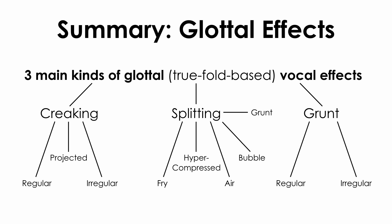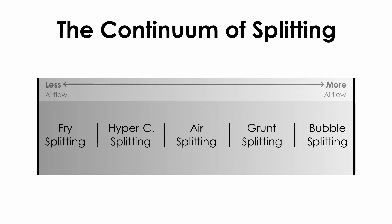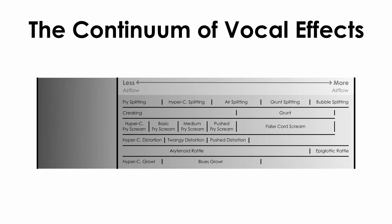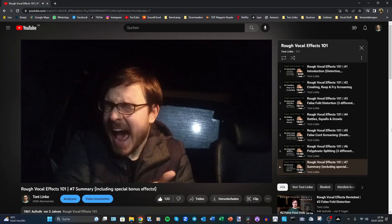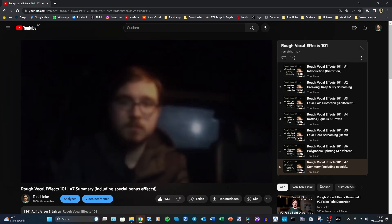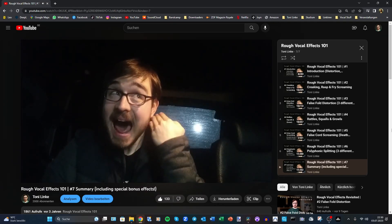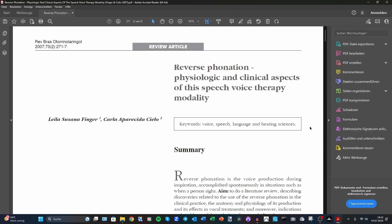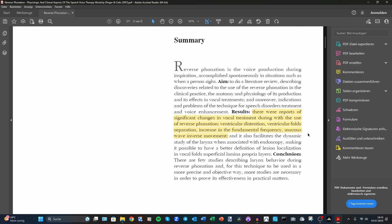Judging from the huge gap between the vocal folds as well as my sensation, bubble splitting requires the highest amount of airflow out of all splitting techniques, and we could make another fancy diagram out of that — the continuum of splitting. Now that we've talked about all exhaled rough vocal effects, we could make an airflow continuum out of that. Let's add inhale screaming and inhale splitting to the continuum. Technically they have negative airflow, and even though I had some doubts about it in 2020, it turns out that ingressive phonation is completely sustainable if done right — and it's actually being used in voice therapy to establish more efficient phonation.